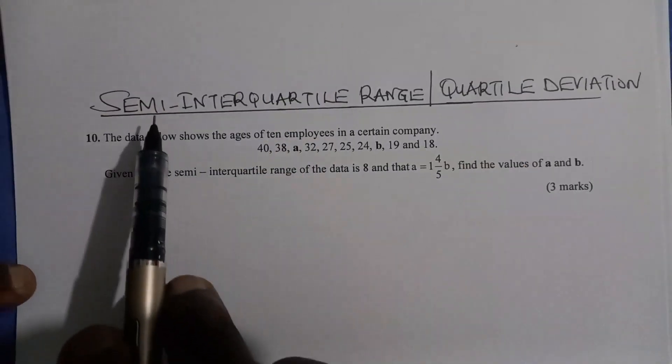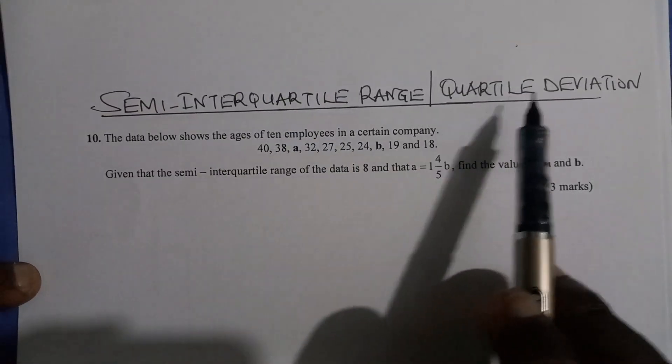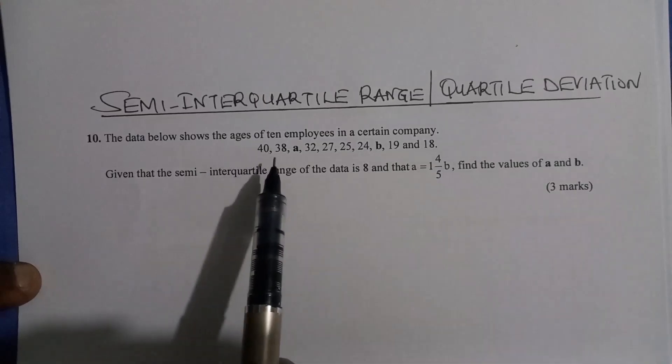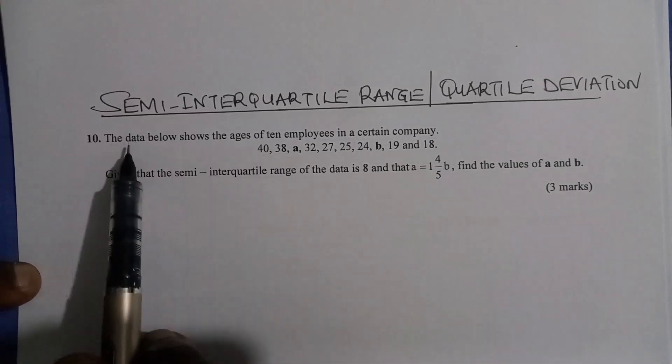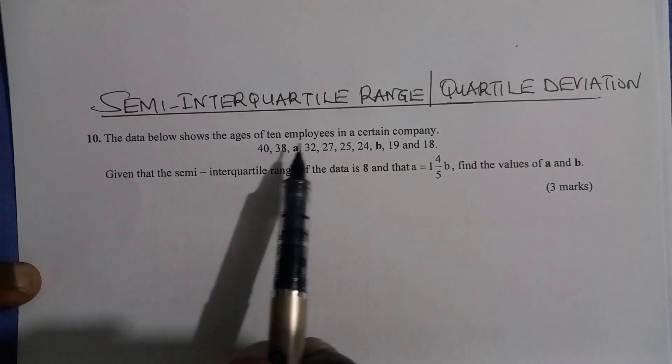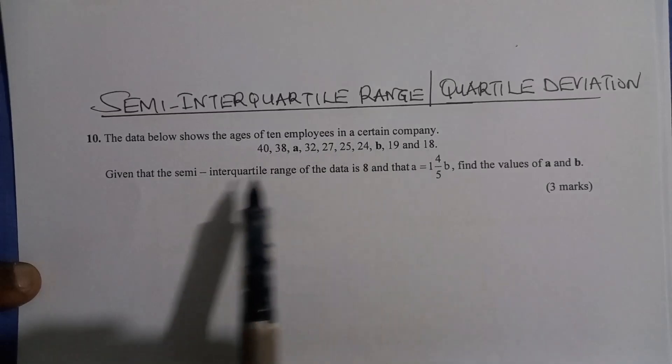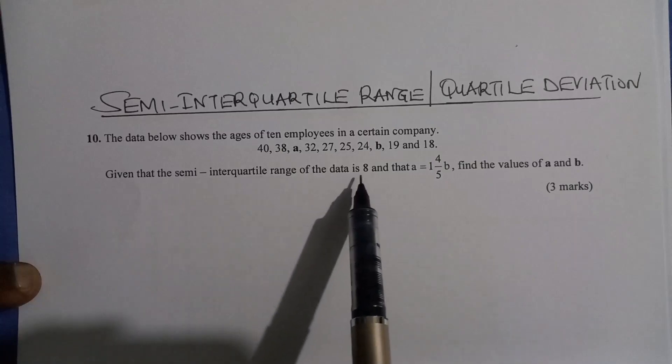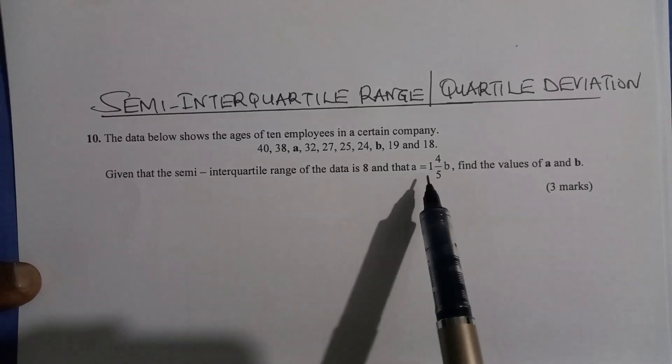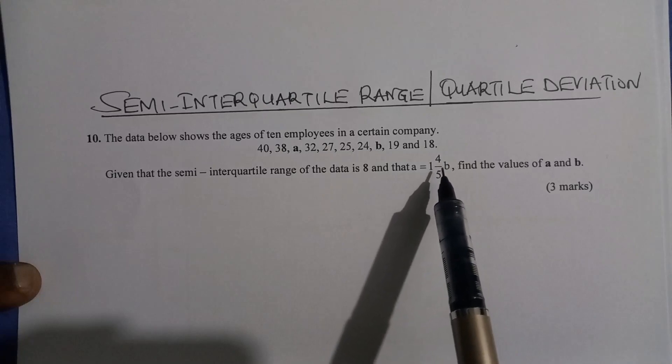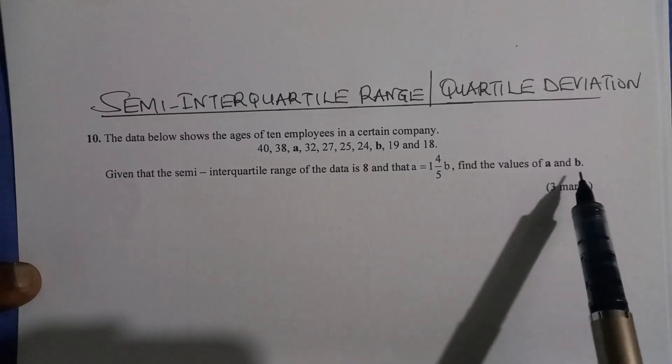Let us solve this question on semi-interquartile range or the quartile deviation for ungrouped data. The data below shows the ages of 10 employees in a certain company. Given the semi-interquartile range of the data is 8 and that A is equal to 1 and 4 over 5B, find the values of A and B.